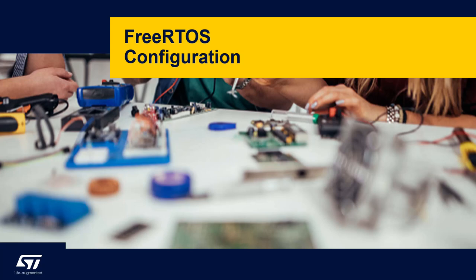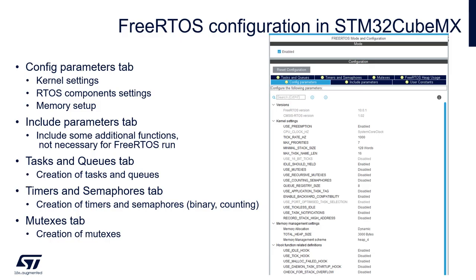FreeRTOS Configuration. There are two main configuration files within FreeRTOS: FreeRTOS.h, keeping more advanced settings, and FreeRTOSConfig.h, where we can configure most of the parameters and add or remove FreeRTOS components and functions.